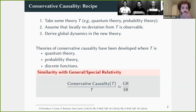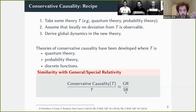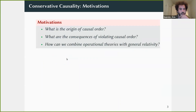There is a hand-wavy similarity when constructing a theory of conservative causality to special and general relativity. The conservative causality theory T relates to the original theory T in the same way as general relativity relates to special relativity — because in general relativity, free-falling observers in sufficiently small spacetime regions are described only by special relativity. Here, we have a global theory, and the local description is always the core theory T.